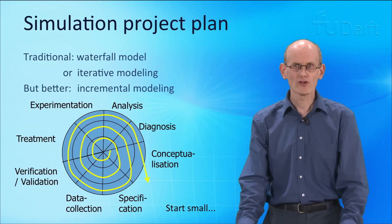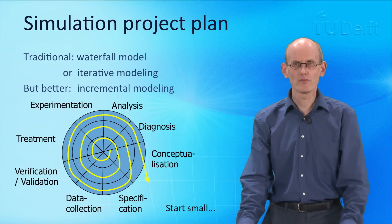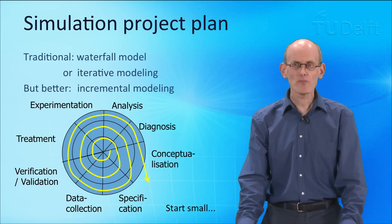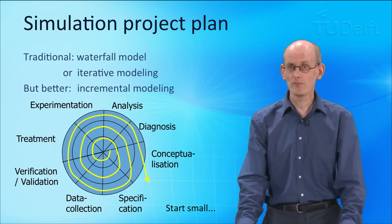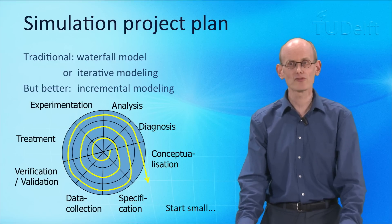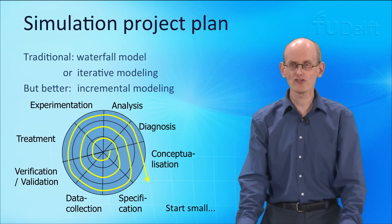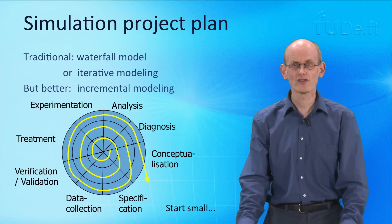It means that we start small — with a tiny model that models the core of the problem or of the infrastructure we are looking at. Step by step we extend the model, going through all the phases of the model cycle again: analyze, diagnose, conceptualize, specify, do data collection, etc., a couple of times in succession, starting small and extending step by step to a bigger model. Especially for large infrastructure models this is an excellent way to do it, because we don't have to make the model all at once, leading to all kinds of bug finding and mistakes.